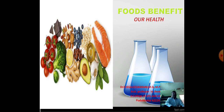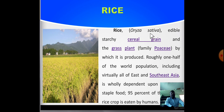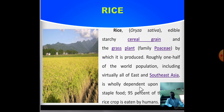There are a lot of food materials around us, but today we will discuss only a few food materials and their benefits for our health. The first one is rice. The botanical name of rice is Oryza sativa, an edible cereal grain and grass plant from the family Poaceae, which feeds roughly one half of the world population, including virtually all East and Southeast Asia, who wholly depend upon rice as a staple food.